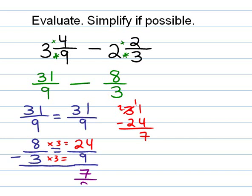31 ninths minus 24 ninths is 7 ninths. Therefore, 3 and 4 ninths minus 2 and 2 thirds equals 7 ninths.